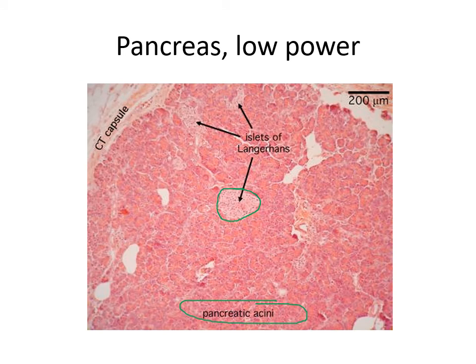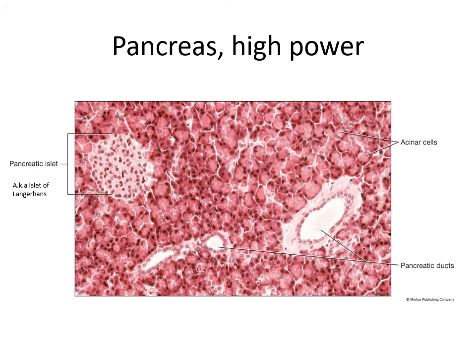So that is the pancreas's exocrine function. Here's another example — you can see the acinar cells quite clearly on this image. Those are the cells producing the enzymes; that's the exocrine function, secreting those enzymes into the duodenum. Over here we have an islet of Langerhans — that's producing insulin and glucagon. That's the endocrine function of the pancreas.